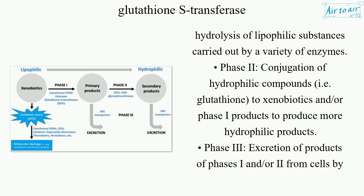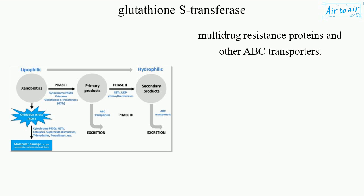Phase II: conjugation of hydrophilic compounds, i.e. glutathione, to xenobiotics and/or phase I products to produce more hydrophilic products. Phase III: excretion of products of phases I and/or II from cells by multidrug resistance proteins and other ABC transporters.